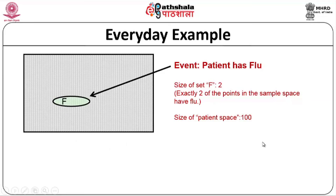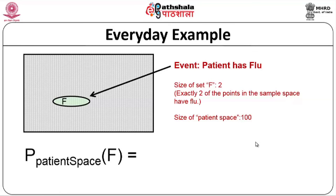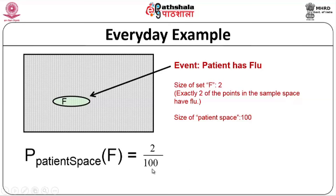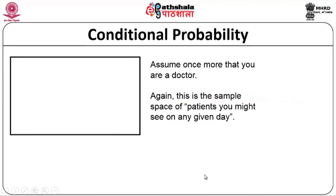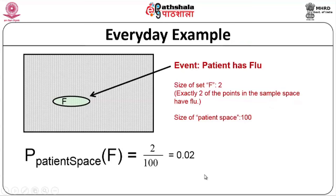Since our sample space size is 100, we can determine the probability of a patient having flu from our given sample space. We need the number of favorable chances and the total number of chances. The number of favorable events is the 2 patients who have flu, and the total number of chances is the total number of patients. So it will be 2 divided by 100, which equals 0.02. We are defining an event based on its probability, and this probability quantifies the chance of a given event.